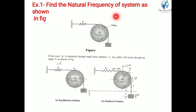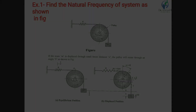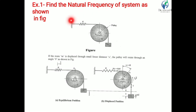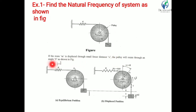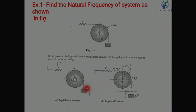Our system is given — there is one pulley, one mass is attached to a string, and this string is wound around the pulley. The pulley is connected with a spring having stiffness k. The spring has stiffness k, the pulley has mass capital M, and small m is the mass attached to the end of the string. We want to determine the natural frequency of this system.